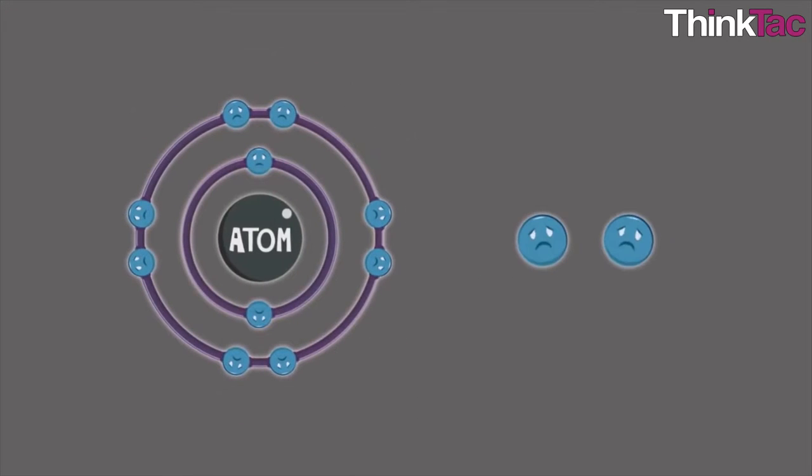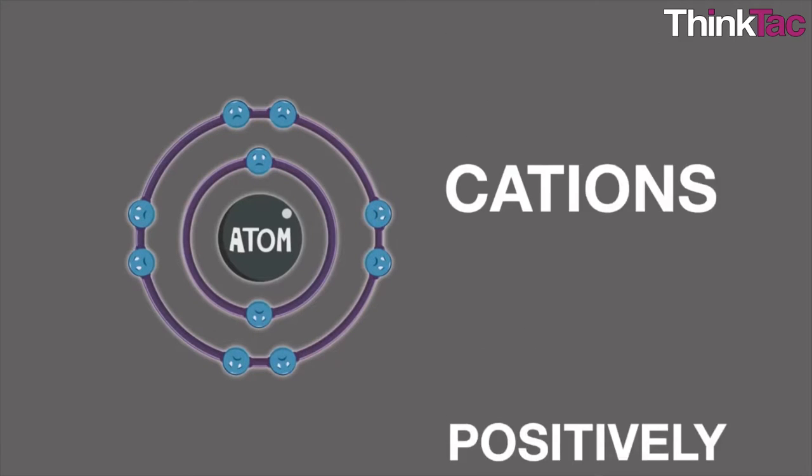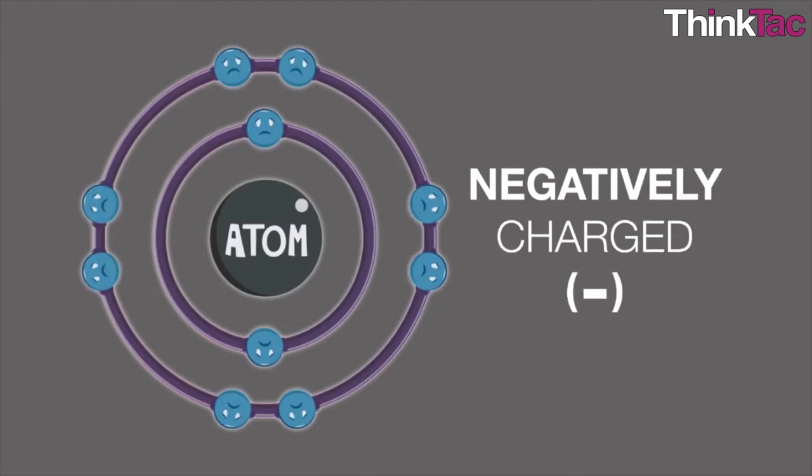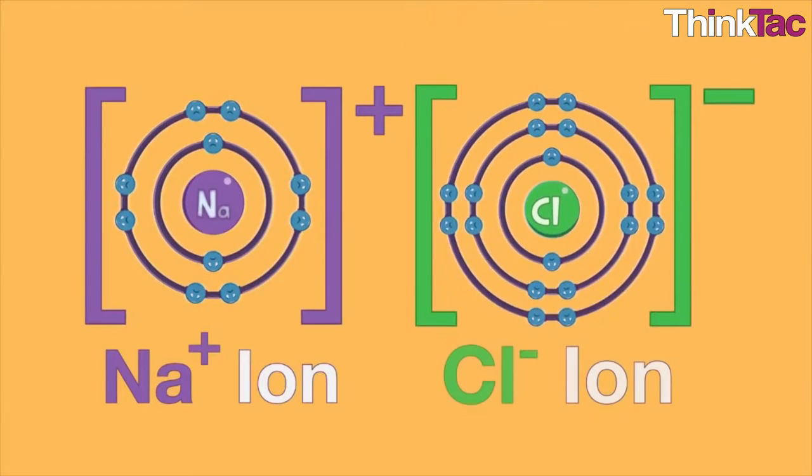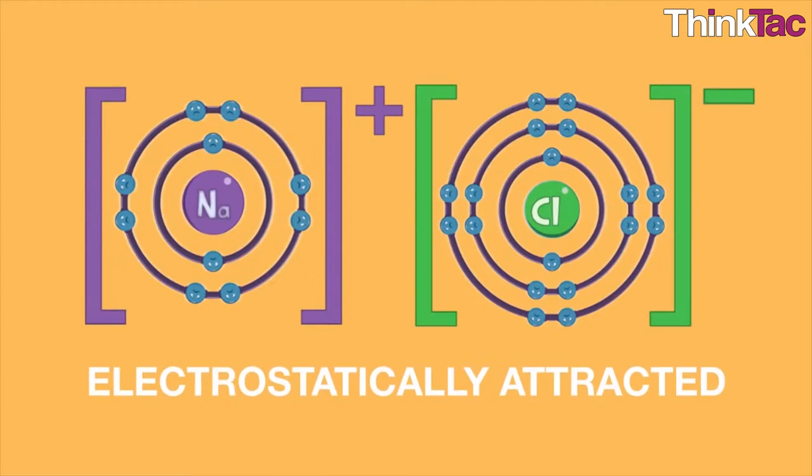A positively charged ion is called a cation—the number of protons is more than the electrons—while a negatively charged ion is called an anion where the number of electrons is more than the number of protons. Because of their opposite electric charges, the anions and the cations attract each other and bond strongly to form ionic compounds such as salts.